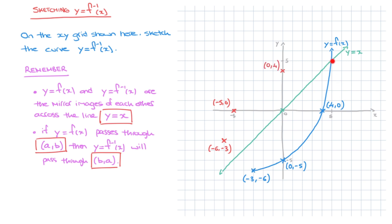Finally, the last point I pick up on is where the blue curve crosses the line y equals x. Whenever f of x crosses that line, the inverse function will cross the line at the same point. So we have 4 points to work with, as well as the fact that the curve we're sketching must be the mirror image of the blue curve across the green line. And if I sketch that, it would look something like this. And there we go — that's the curve of the inverse function of f.